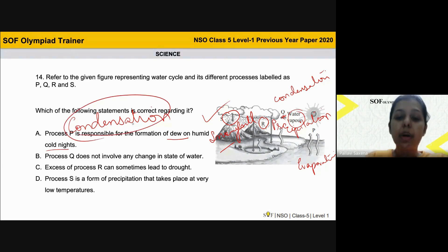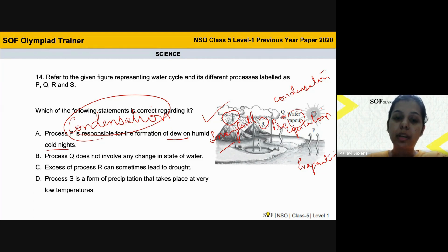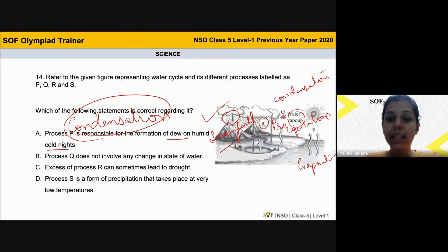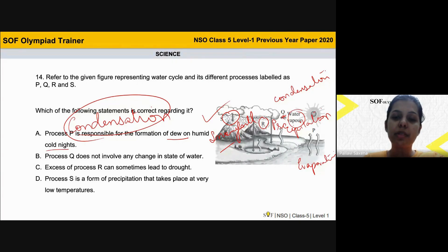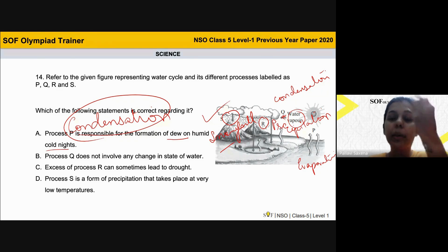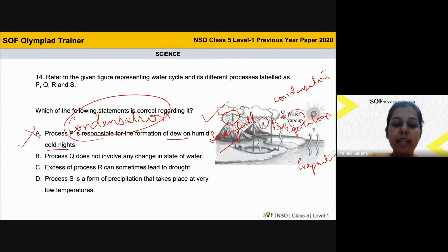Yes, condensation is responsible for the formation of dew, not evaporation. Condensation is when water vapor — the gaseous form — changes back into liquid water drops. So gaseous phase changes into the liquid phase, and that is how liquid dew drops are seen. So condensation is responsible for that process, not evaporation.